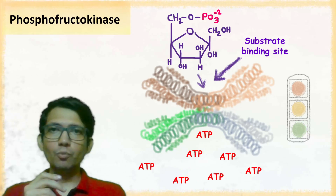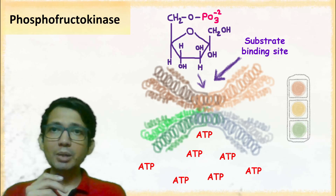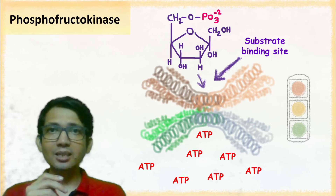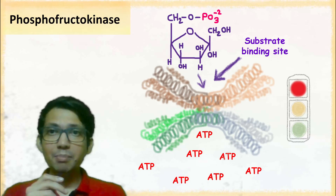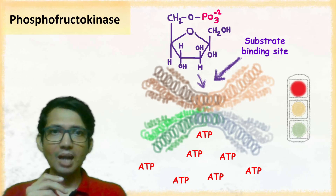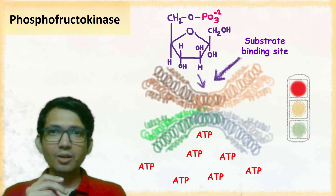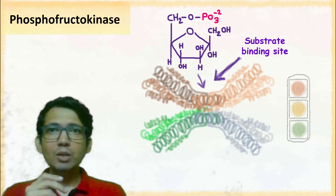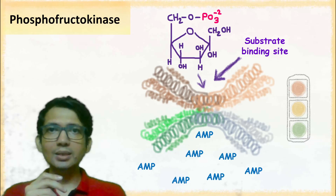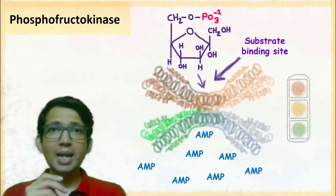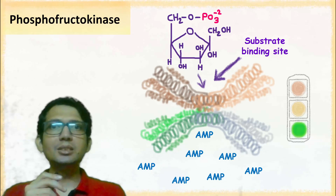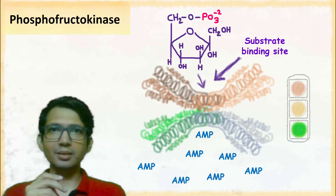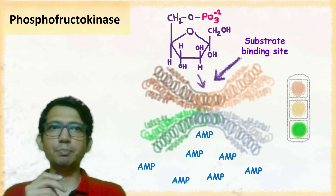When the ATP concentration in the cell is high, ATP inhibits this enzyme. And if AMP concentration in the cell is high, then AMP stimulates this enzyme.